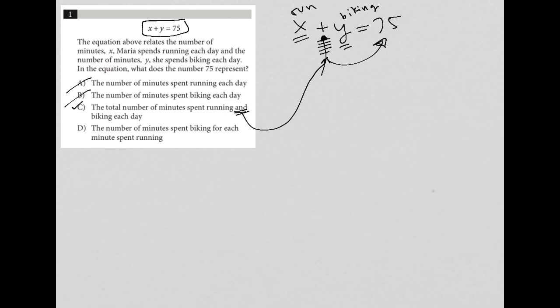Then choice D, the number of minutes spent biking for each minute spent running. Well, that doesn't make any sense at all. So we're going to get rid of that. So choice C here is the best answer.